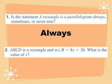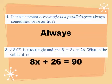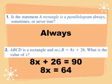Number 2: ABCD is a rectangle and the measure of angle B equals 8X plus 26. What is the value of X? For a shape to be a rectangle it must have four right angles, so angle B must equal 90. Setting 8X plus 26 equal to 90, subtract 26 from both sides to get 8X equals 64, then divide both sides by 8 to find X equals 8.